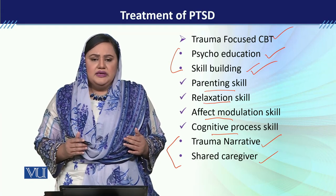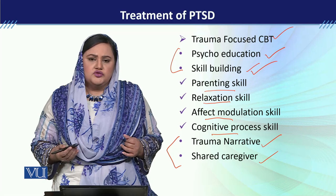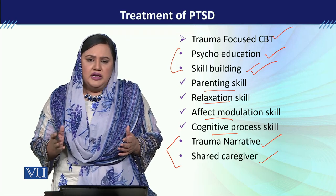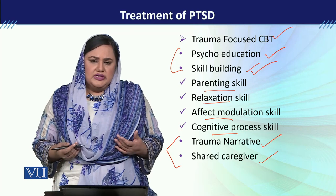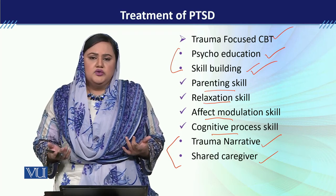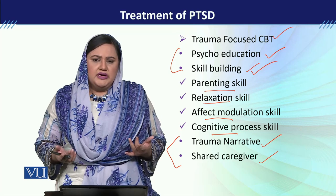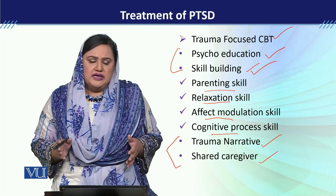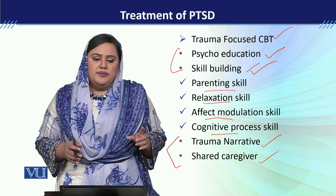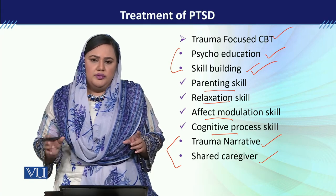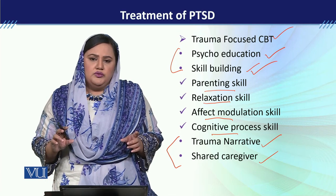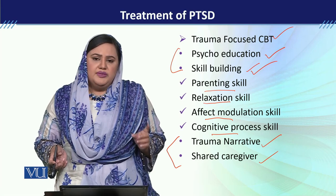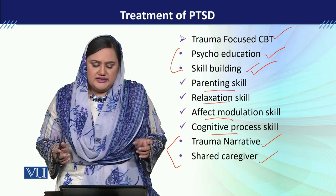Parenting skill यह है कि हमने parents को educate करना होता है कि उन्होंने बच्चे को किस तरह deal करना है. For example, अगर बच्चे का कोई externalizing behavior आ रहा है, जैसे temper tantrums, anger, या sleeplessness, तो आपने उन चीजों को किस तरीके से handle करना है. और चूँकि parents उस वक्त खुद भी एक trauma से गुज़र रहे होते हैं, उनको यह भी सिखाया जाता है कि how they can handle their own stress.